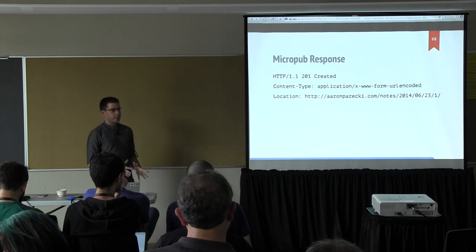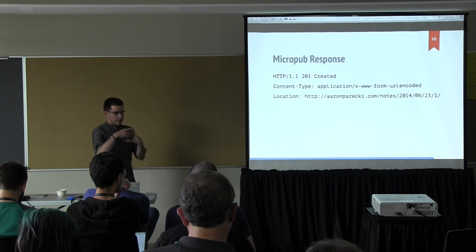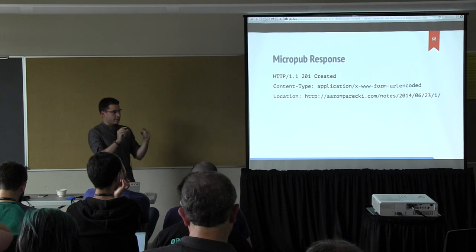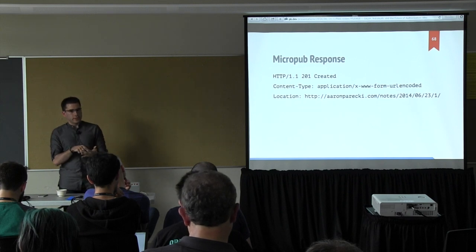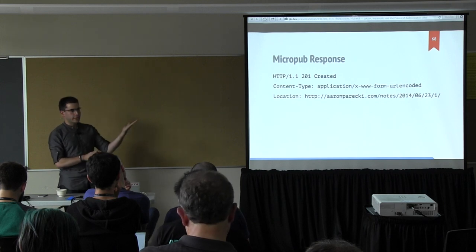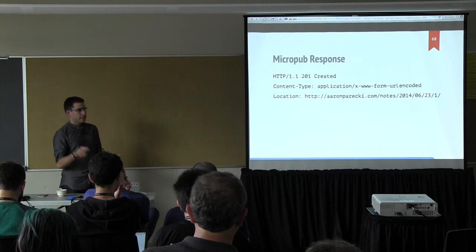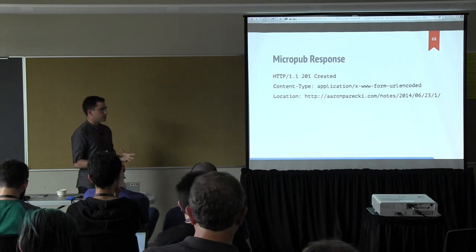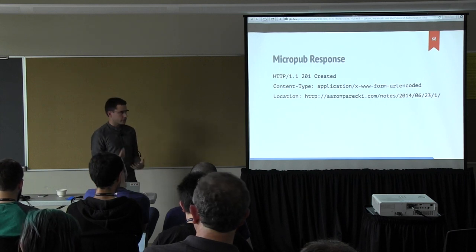After my endpoint creates that post, it responds with 201 Created and a location header indicating the URL it just created. The neat trick here is: assume the simplest possible example — you're staring at an HTML form, you have a field called content and a hidden field called h, and you have a submit button. If you submit it, your browser sends a POST request. If the response has a location header, your browser gets taken to that URL. So what's the end-user experience? You submit the form, you see the post. It requires very little additional work because this stuff is already built into browsers and HTTP.